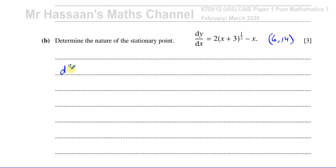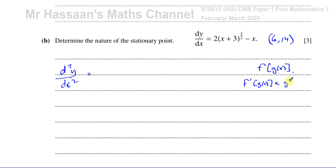So we take d²y/dx². We have a function inside a function, so we use the chain rule: differentiate the outer function, multiply by the power, reduce the power by one, then multiply by the differential of the inner function. Differentiating x + 3 gives 1, so it doesn't affect the result here. The result is 1 over the square root of (x + 3) minus 1.